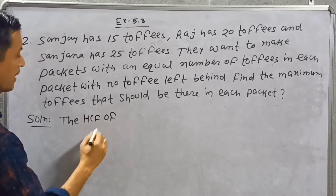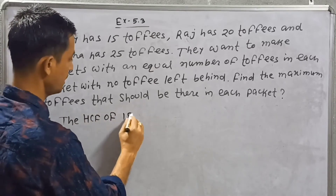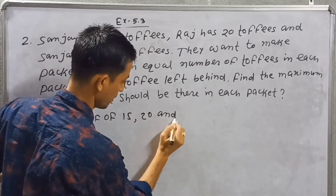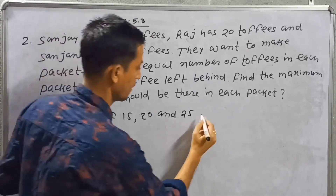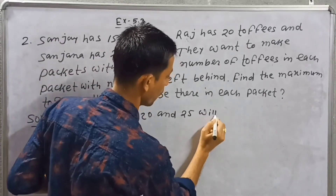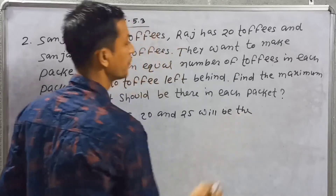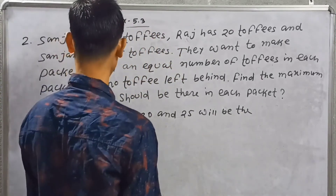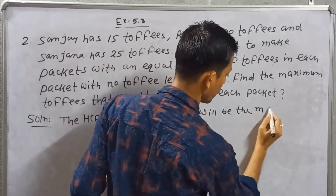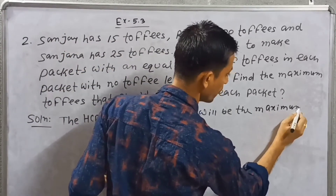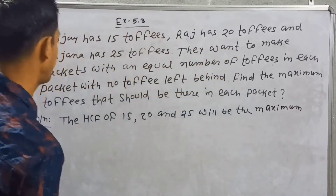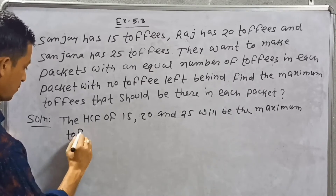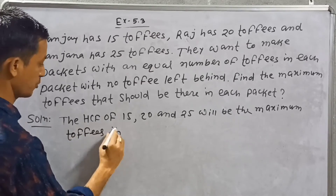Find the maximum toffees that should be there in each packet. The HCF of 15, 20, and 25 will be the maximum toffees in each packet.